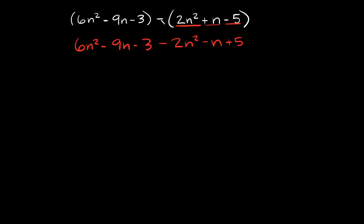The reason we do that is because of this minus sign right here — what we're actually doing is distributing it into this set of parentheses, to the first term, to the second term, and to the third term. Because this minus sign is really like there's a minus 1 out here. So negative 1 times 2n squared gives negative 2n squared, negative 1 times n gives negative n, and negative 1 times negative 5 is positive 5. So the shortcut is to just change all the signs when you drop the parentheses.